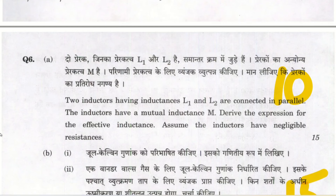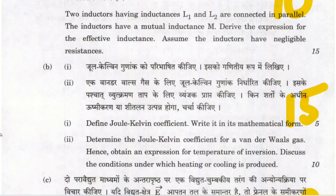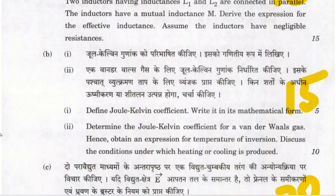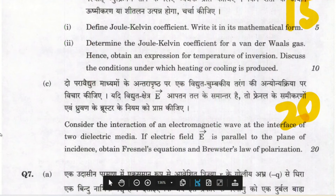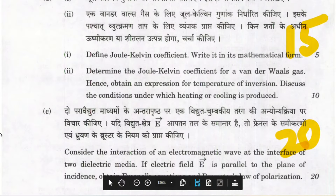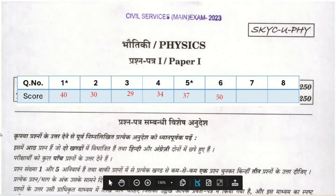Question 6: Effective inductance of two inductors L1 and L2 connected in parallel with mutual inductance — derivation, 10 marks. Joule-Kelvin coefficient derivation — 15 marks. Part C — Fresnel equations with electric field parallel to plane of incidence — pure derivation, 20 marks. Total: 45 marks. You can actually score full 50 marks in Question 6 if you know this derivation well.